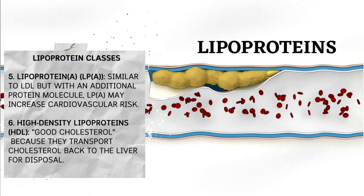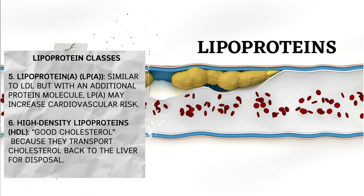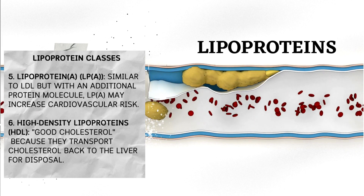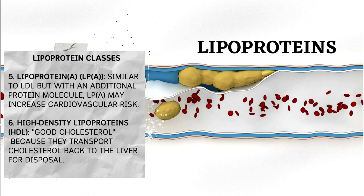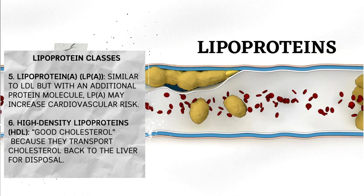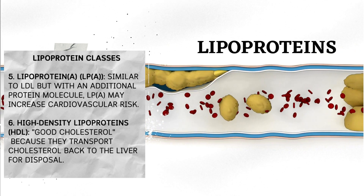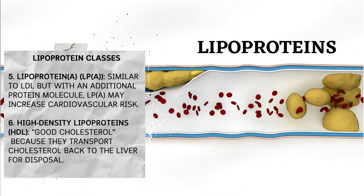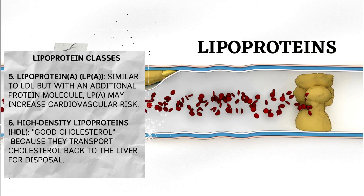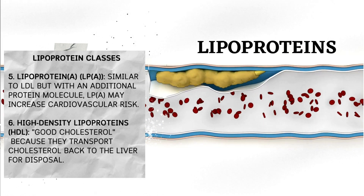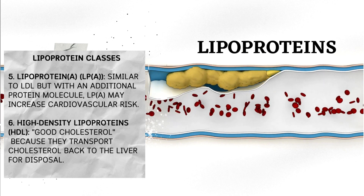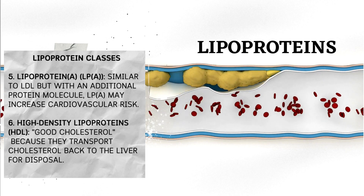High LDL levels are a risk factor for atherosclerosis — plaque buildup in arteries. Lipoprotein(a), or Lp(a), is similar to LDL but with an additional protein molecule and may increase cardiovascular risk. High-density lipoproteins (HDL), often called good cholesterol, transport cholesterol back to the liver for disposal. HDL helps to remove excess cholesterol from tissues, promoting cardiovascular health.